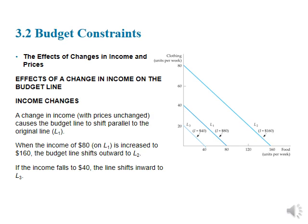When income changes, the entire budget line is going to shift. Why might that be the case? Remember, what we know is that points and slope determine a line. The slope of the line is the ratio of prices — the relative prices — and relative prices haven't changed in this example. What's changed is income. And income determines our intercepts of the line. So previously we were here on this middle line where income is $80, and we intercepted the clothing axis at income over the price of clothing, which was $2 a unit, giving us an intercept of 40. And on the food axis, income over the price of food, which was $1 a unit, we intercept the axis at 80 units of food.